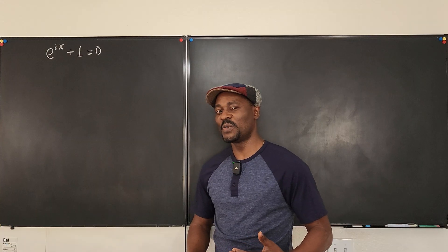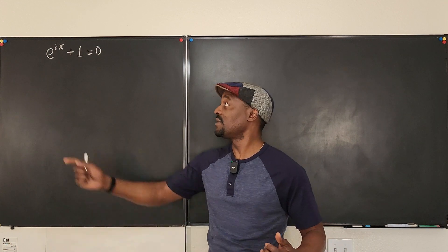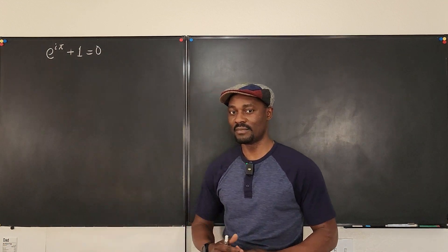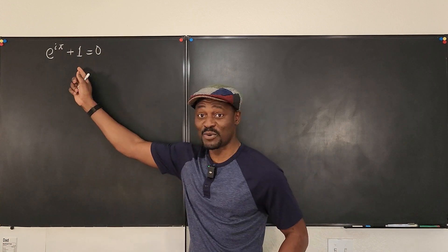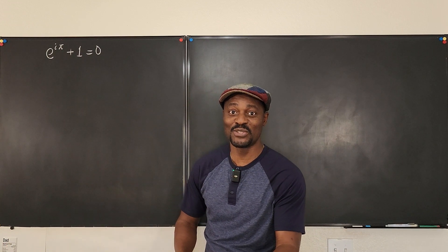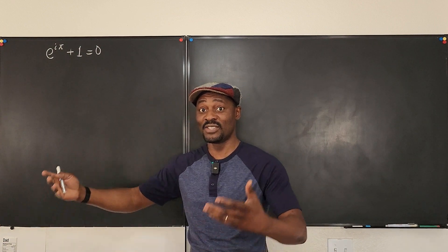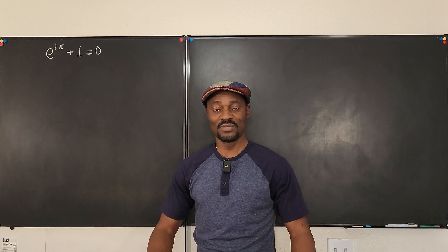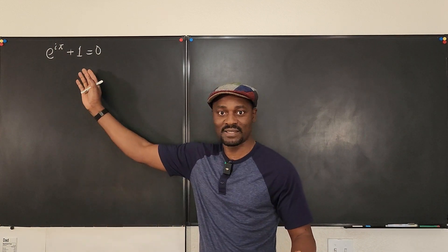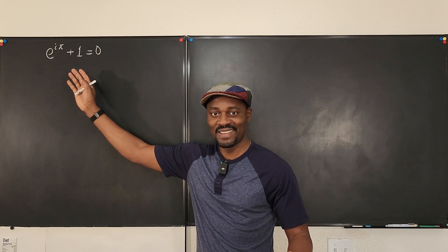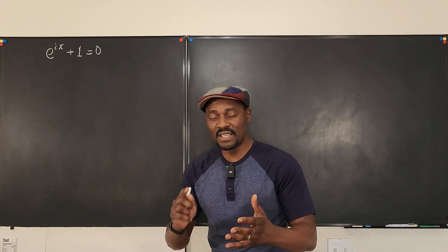We call this Euler's equation because of Euler's number, but that's not the only reason. We call it Euler's equation because Euler was just messing around with Taylor's theorem — Taylor series — and came up with this. So how did he do that?